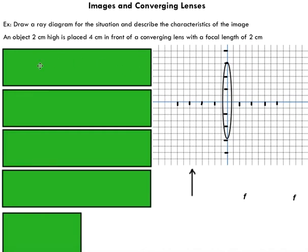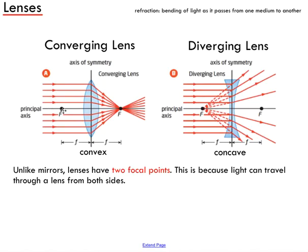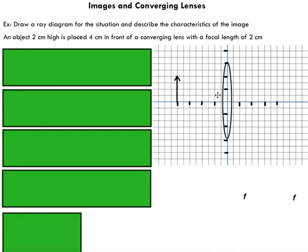We have a two-centimeter high object, represented by an arrow. On the grid, two spaces represent one centimeter, so you can see the object is two centimeters high. It's placed four centimeters in front of the converging lens. The focal length is two centimeters — that's the distance between the focal point and the lens. I've labeled two focal points, one on each side, and the diagram is set up accordingly.